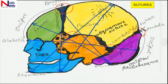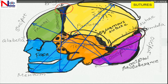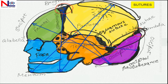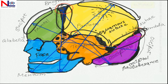So we have seen a lambdoidal suture posteriorly, a lateral squamous suture, one sagittal suture superiorly, and anteriorly there is a coronal suture and the frontal suture as well. All these sutures allow the gliding movement of one bone over another, thus reducing the diameter of the fetal skull so that it easily passes through the birth canal.